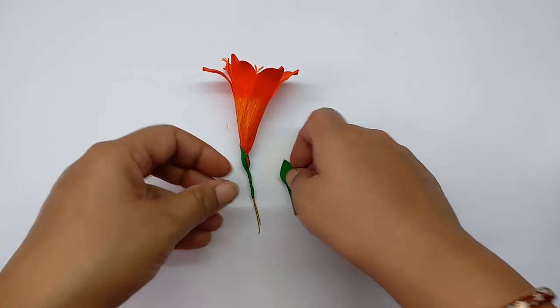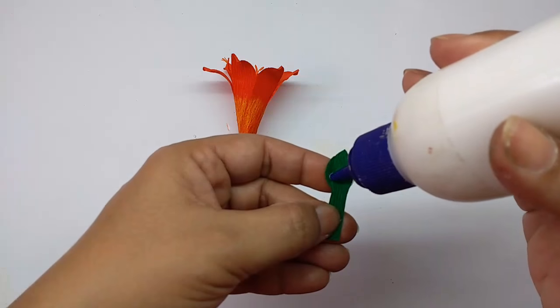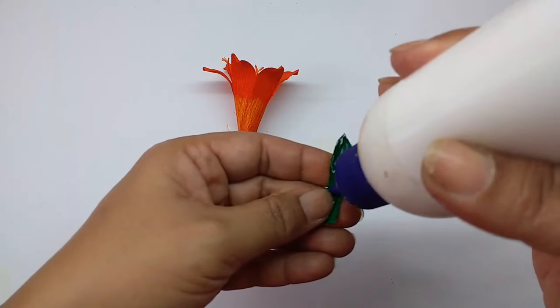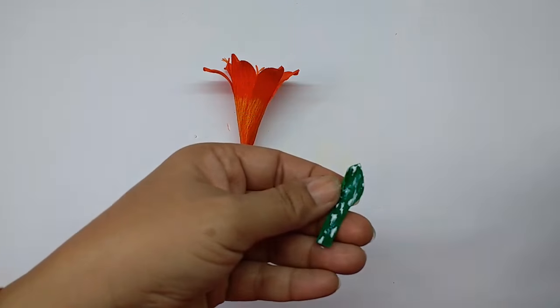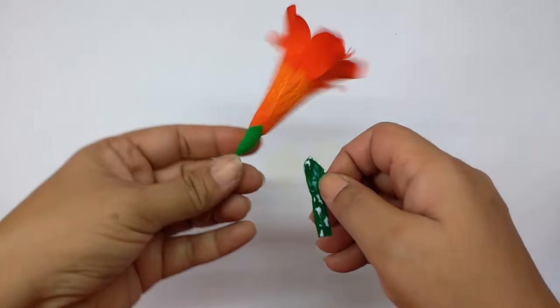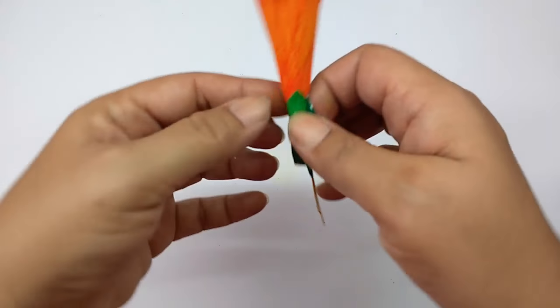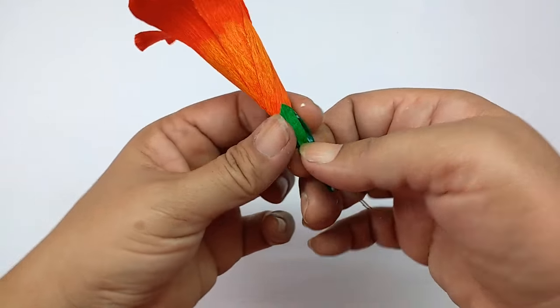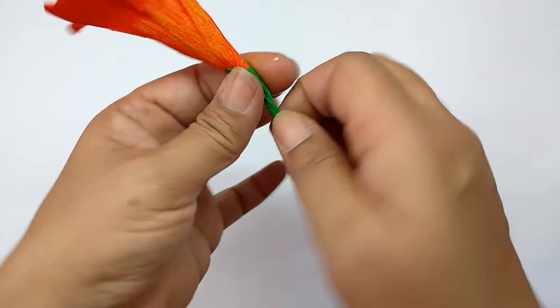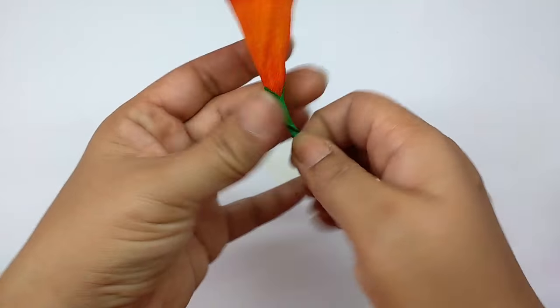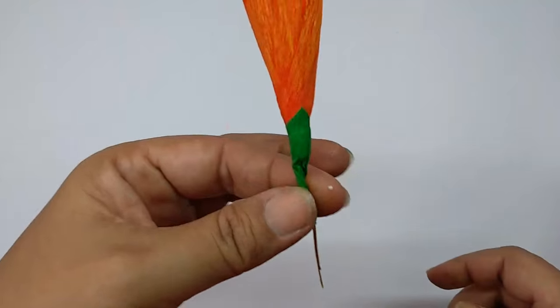Then on the other side also, stretch the sepal and stick this right opposite the first one. Then again twist the stem. This is what it looks like.